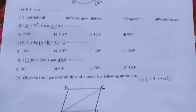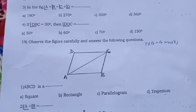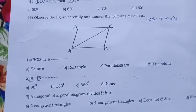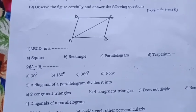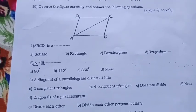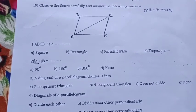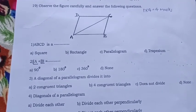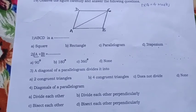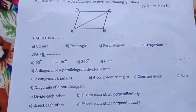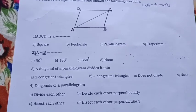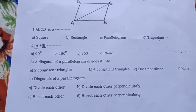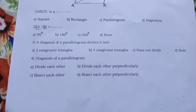Observe the figure carefully and answer the following questions. See here also, each carries one mark. ABCD is a square, rectangle, parallelogram, trapezium. Angle A plus angle B equal to 90, 180, 360, none. A diagonal of the parallelogram divides into two congruent triangles, four congruent triangles, does not divide, none. Diagonals of the parallelogram divide each other, perpendicularly bisect each other, bisect each other.